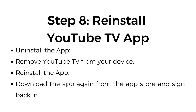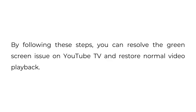Step 8: Reinstall the YouTube TV app. Uninstall the app by removing YouTube TV from your device. Reinstall the app by downloading it again from the App Store and signing back in. By following these steps, you can resolve the green screen issue on YouTube TV and restore normal video playback.